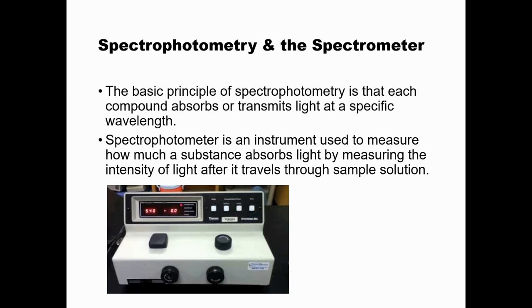The basic principle of spectrophotometry is that each compound absorbs or transmits light at a specific wavelength. A spectrophotometer is an instrument used to measure how much a substance absorbs light by measuring the intensity of light after it travels through the sample solution.